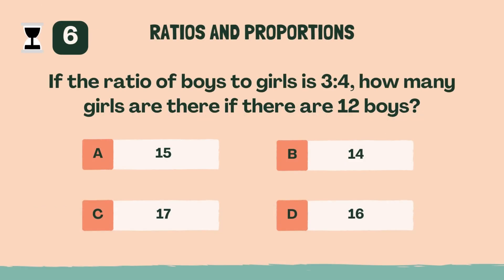If the ratio of boys to girls is three to four, how many girls are there if there are twelve boys? D, 16.